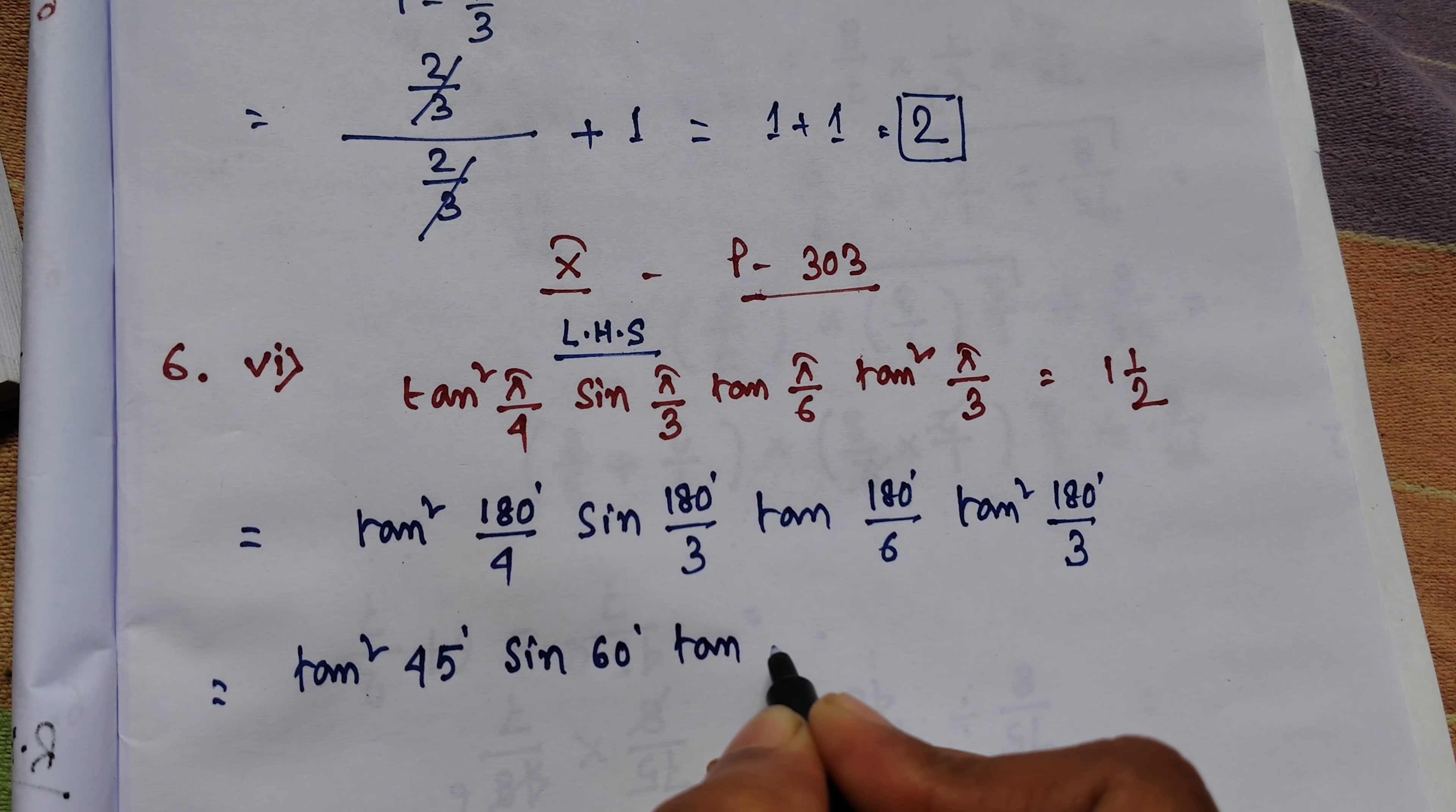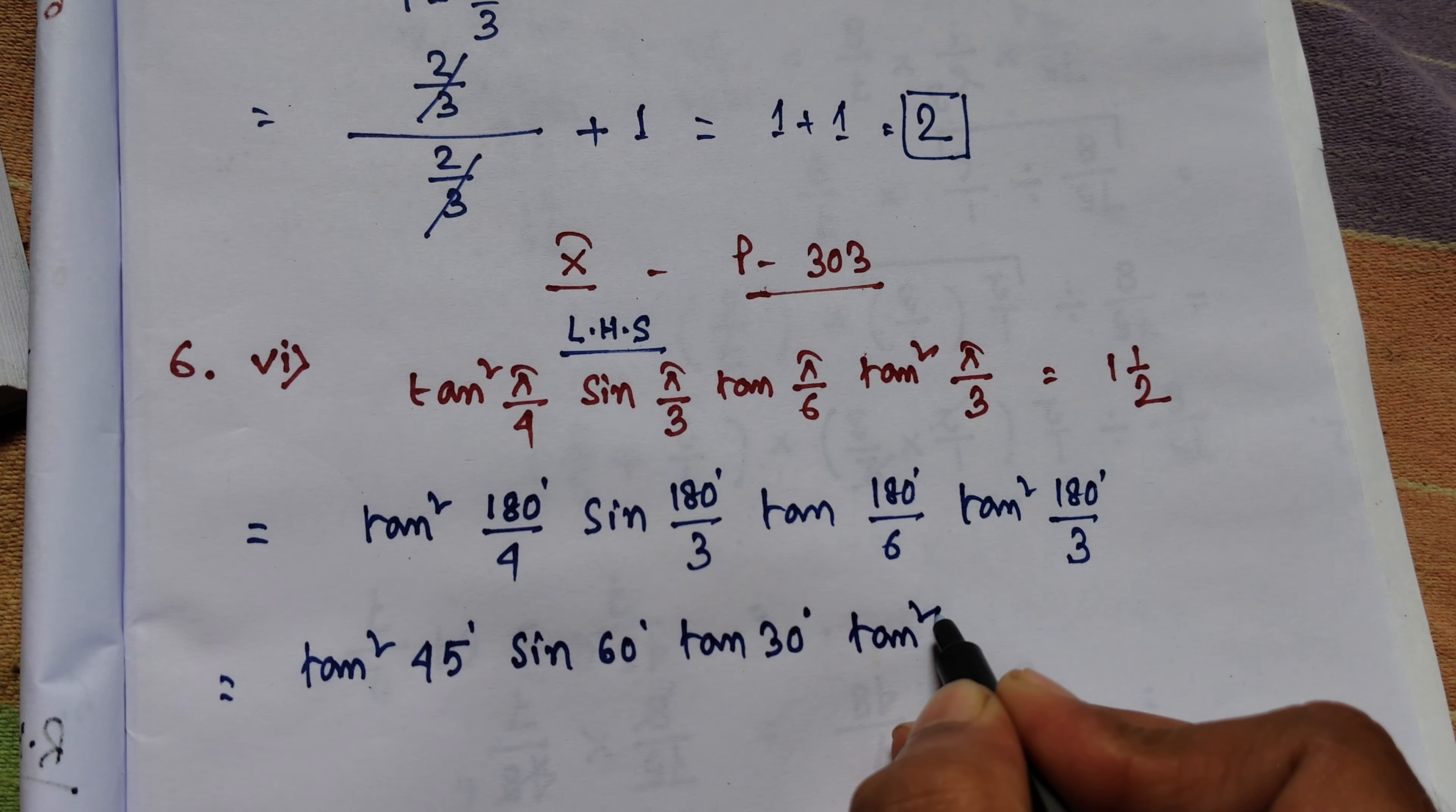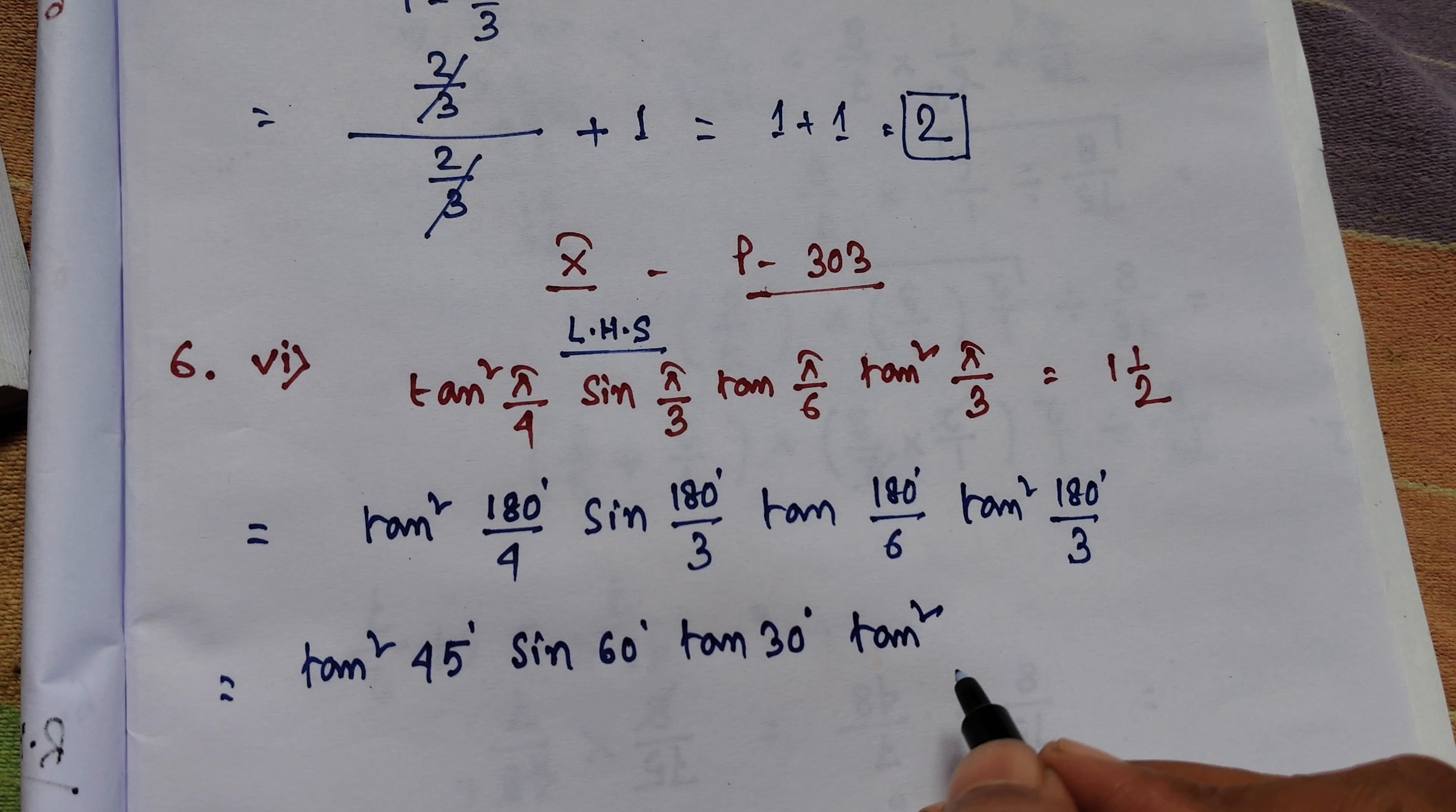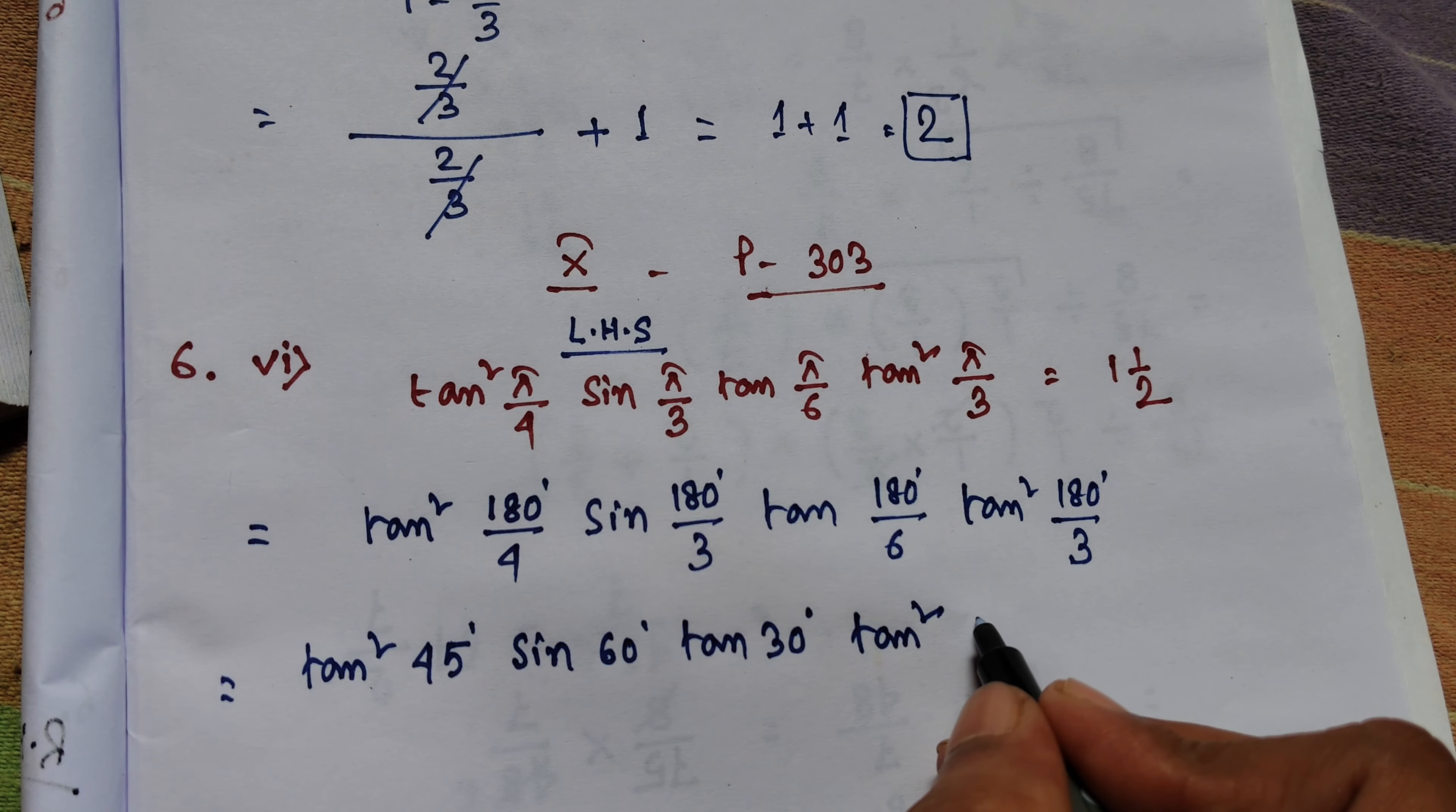It is tan squared. Tan squared is equal to 60 degrees.